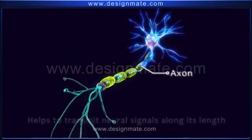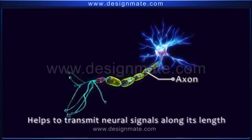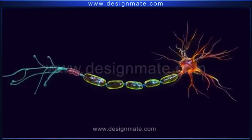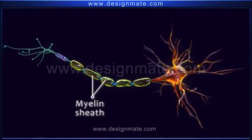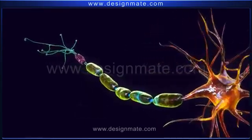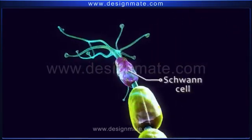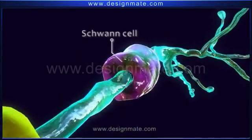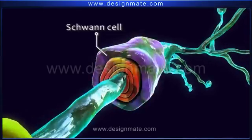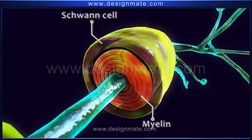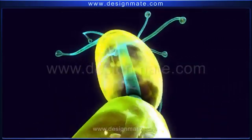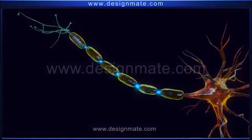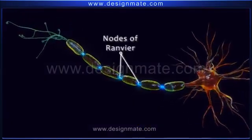The axon is long and helps to transmit neural signals along its length. It is covered intermittently by a fatty substance called the myelin sheath. On the axon, we observe a Schwann cell wrapped around it. The Schwann cells begin to secrete layers of fatty deposits known as myelin. There are gaps with no myelin sheath, and these gaps are known as the nodes of Ranvier.